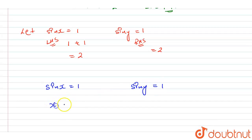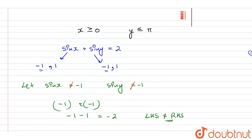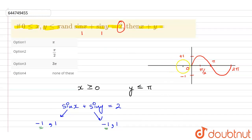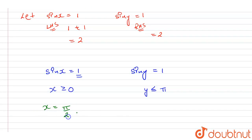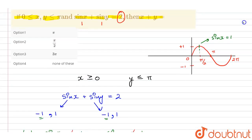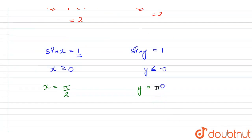The constraint is that x is greater than or equal to 0 and y is less than or equal to π. Since sin x equals 1 for x ≥ 0, we see that this occurs at x = π/2. So the value of x equals π/2. For y, we need y ≤ π and sin y equals 1, which also occurs at y = π/2. So the value of y is also equal to π/2.